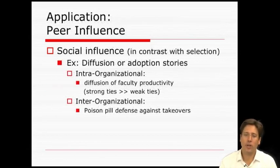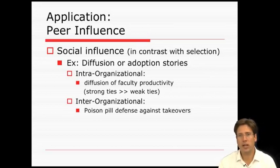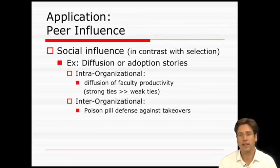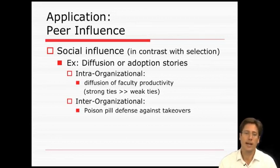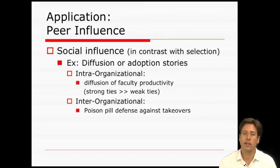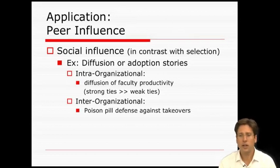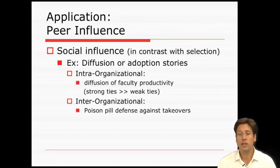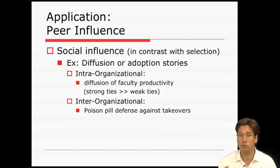First, let's consider how relations influence behavior, or what we call peer influence. The general argument is that people we associate with change us and lead us to act in ways we wouldn't act on our own. In organizations research, these studies focus on social diffusion and the adoption of organizational innovations. Researchers find that close ties are a great means to diffusing attitudes and behaviors. At the interorganizational level, scholars find that adoption of innovations often flows through associations like interlocking boards of directors or alliance networks.